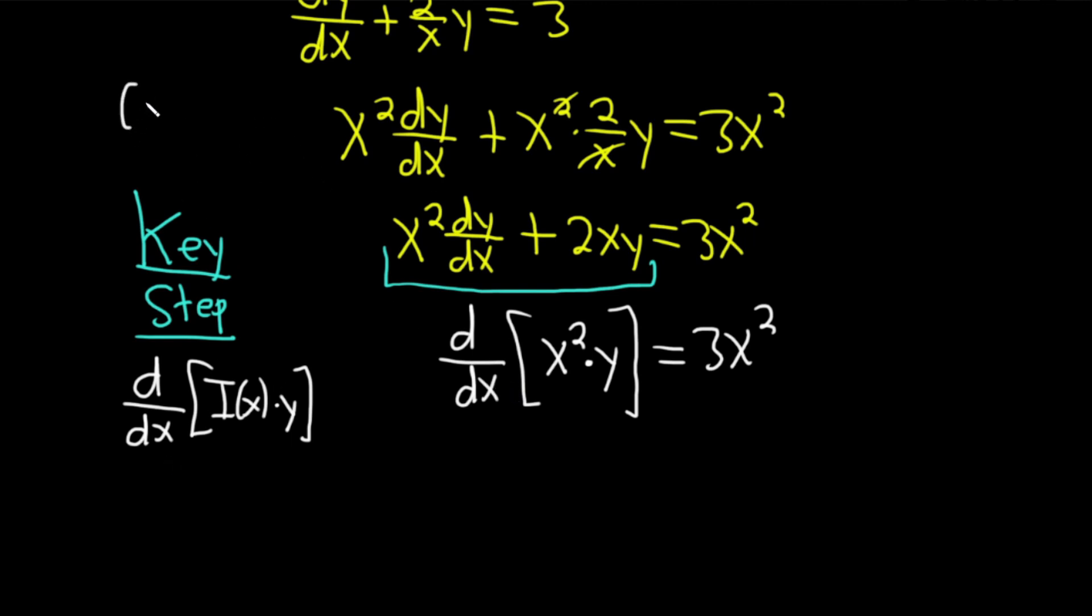Apply that to x²y. x² is your first, y is your second. The derivative of x² is 2x times the second, plus the first, which is x², times the derivative of the second, which is dy/dx. The derivative of the first is 2x times y, plus the first, which is x², times the derivative of the second, which is dy/dx. You should always check.